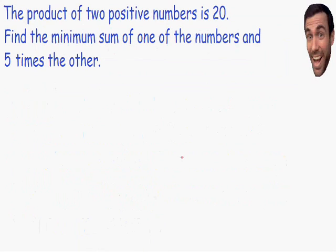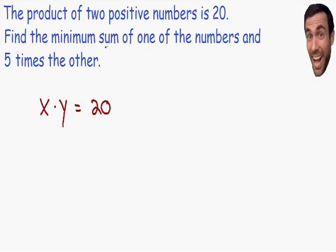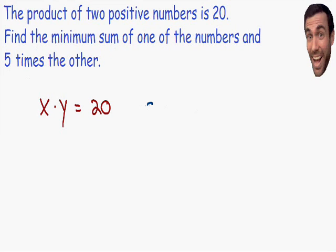I started with an easier example so you get a good idea of how this works. It says the product of two positive numbers is 20. We have two numbers — I'll label one as x and the other as y — and we're multiplying them together so that the product equals 20. It also says find the minimum sum, and the sum is always addition: the sum of one of the numbers and five times the other, so sum equals x plus 5 times y.